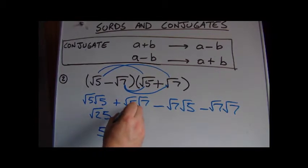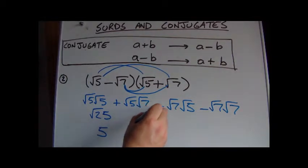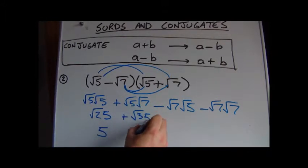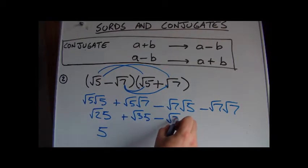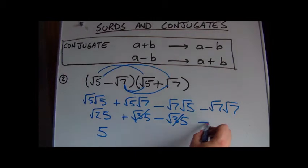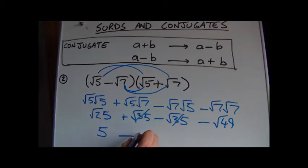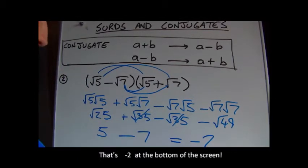We've got root 5 times root 7, and we've got to subtract root 7 times root 5. The order of these things doesn't matter. If you think about it, this is like plus root 35, this is like minus root 35, so they will cancel. And at the end there we've got root 49, and root 49 is a number that we can simplify, so it gives us minus 7, so in this case we end up with minus 2.